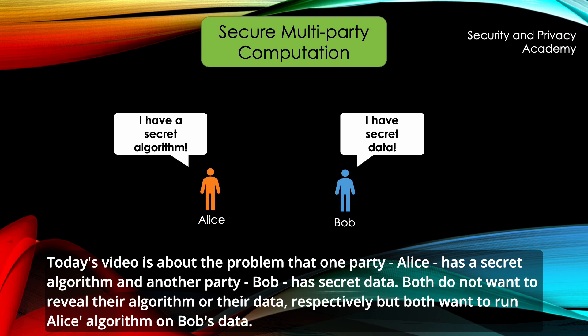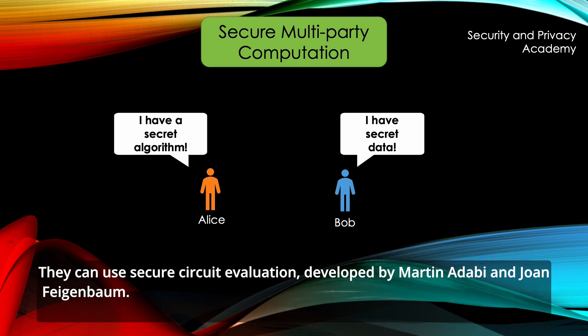Today's video is about the problem that one party, Alice, has a secret algorithm and another party, Bob, has secret data. Both do not want to reveal their algorithm or the data respectively but both want to run Alice's algorithm on Bob's data.